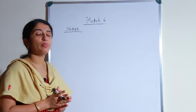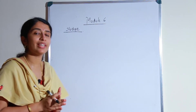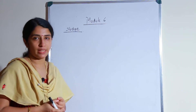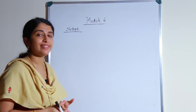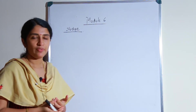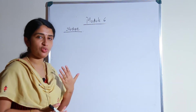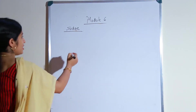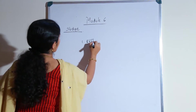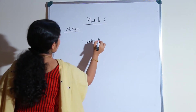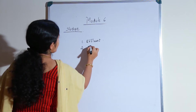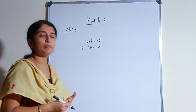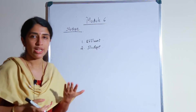Hello students, today we are starting Module 6. Module 6 is dealing with the sludge and various sludge treatment methods. After wastewater treatment we get two end products: the first one is effluent, which means the treated wastewater, and the second one is what is called sludge. So these are the two end products of the wastewater treatment.